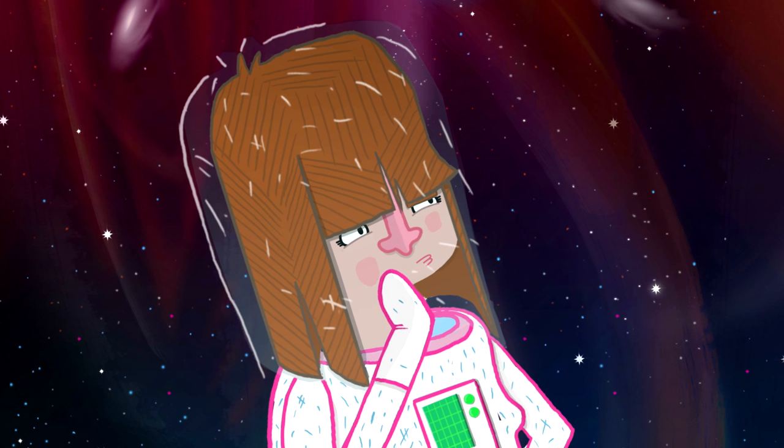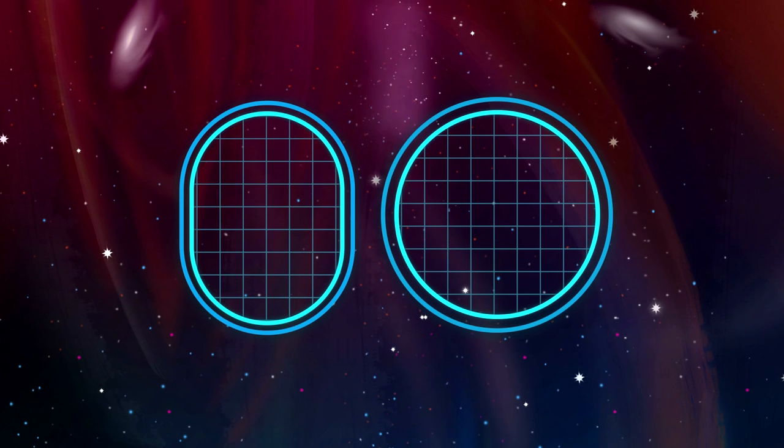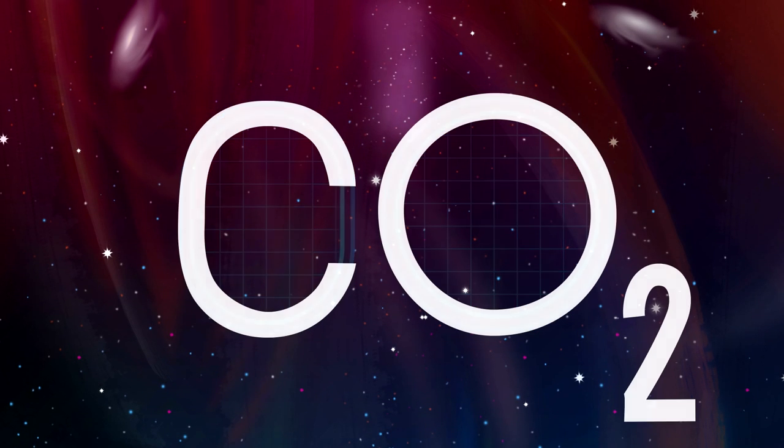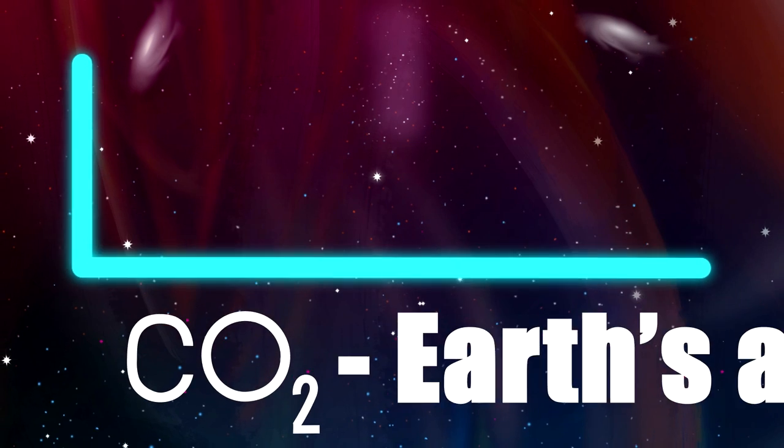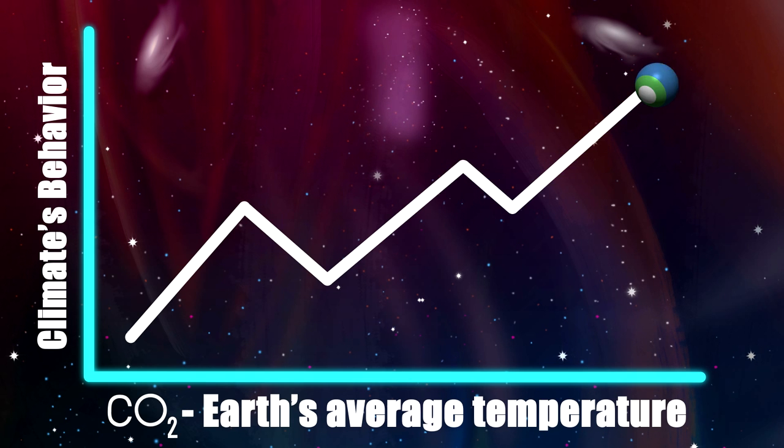So what implications does this simple example have for the much more complicated reality of the Earth's climate? We can think of the shape of the table as being analogous to the CO2 level and Earth's average temperature, constraints that impact the system's performance in the form of the ball's motion or the climate's behavior.